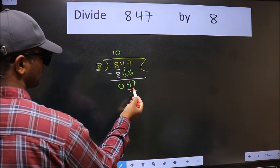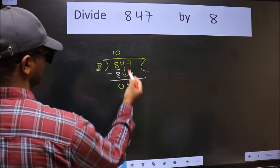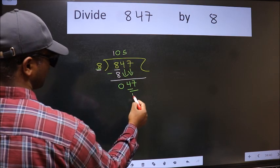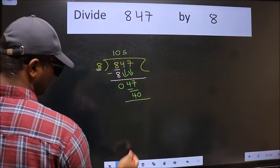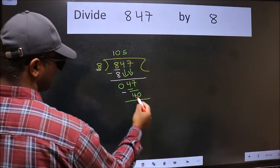Now 47. Our number close to 47 in 8 table is 8, 5, 40. Now we should subtract. We get 7.